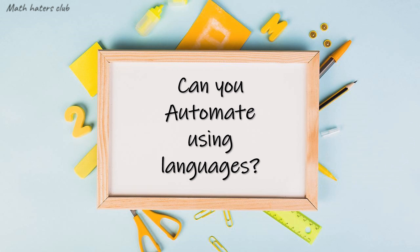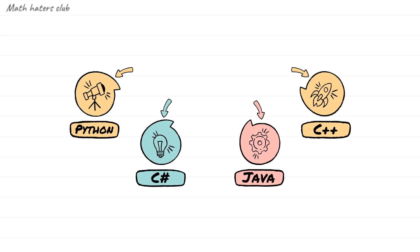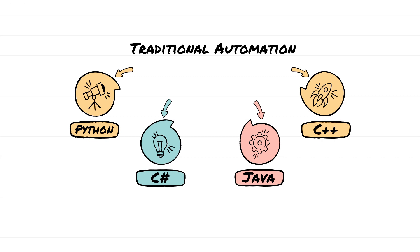If we learn a programming language, we can automate things easily. For example, Python, C Sharp, Java, and C++. This is called Traditional Automation. The positive side is it is very effective, but the negative side is it is time-consuming and requires maintaining thousands of lines of code. We can use RPA tools to reduce that complexity easily.